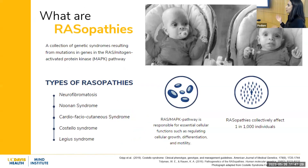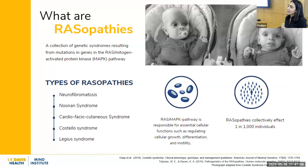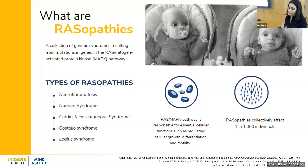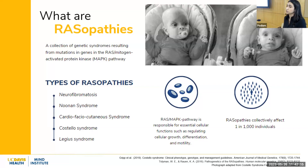I'd like to start by answering: what are RASopathies? RASopathies are a collection of genetic syndromes resulting from mutations in genes in the RAS/MAPK pathway. There are different types, including neurofibromatosis, Noonan syndrome, Costello syndrome, and cardio-facial cutaneous syndrome, among others. The RAS pathway is responsible for essential cellular functions like cellular movement, cellular growth, and changes in cell type. Any disruption to this pathway could cause consequences across many different systems in the body, as we see in the clinical features of children with RASopathies.